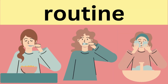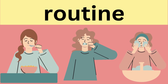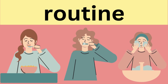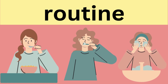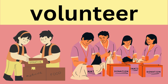The third word is routine. Routine means a regular course of action. The fourth word is intelligent. Intelligent means having a great ability to learn, think, and understand. The fifth word is volunteer. Volunteer means a person who offers to work or help without pay.